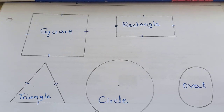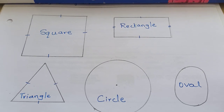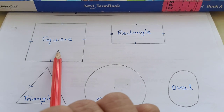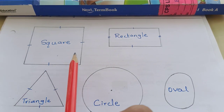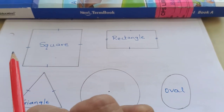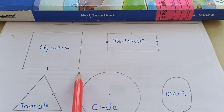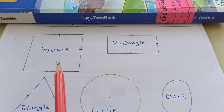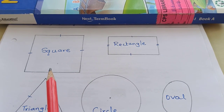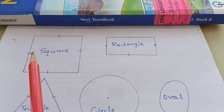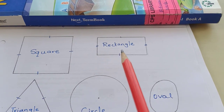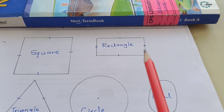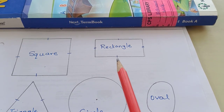Let us revise quickly about the flat shapes. A square. A square has four sides and four corners. The speciality about a square is all the four sides are equal.